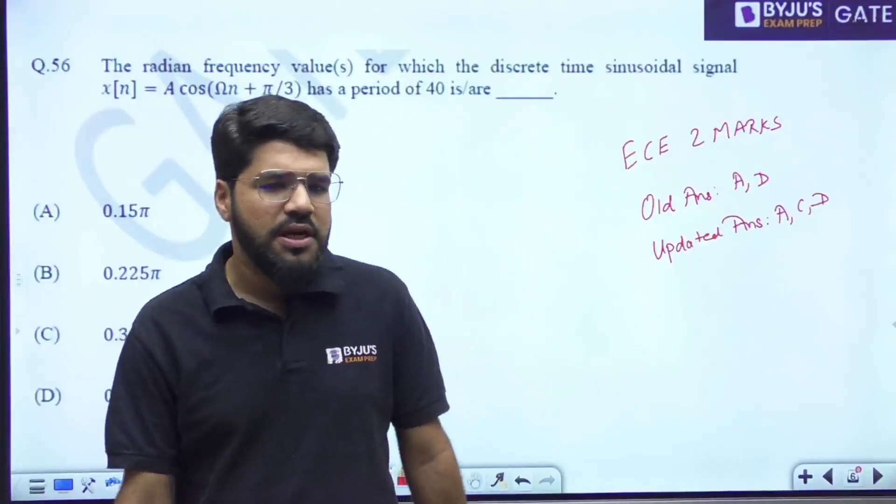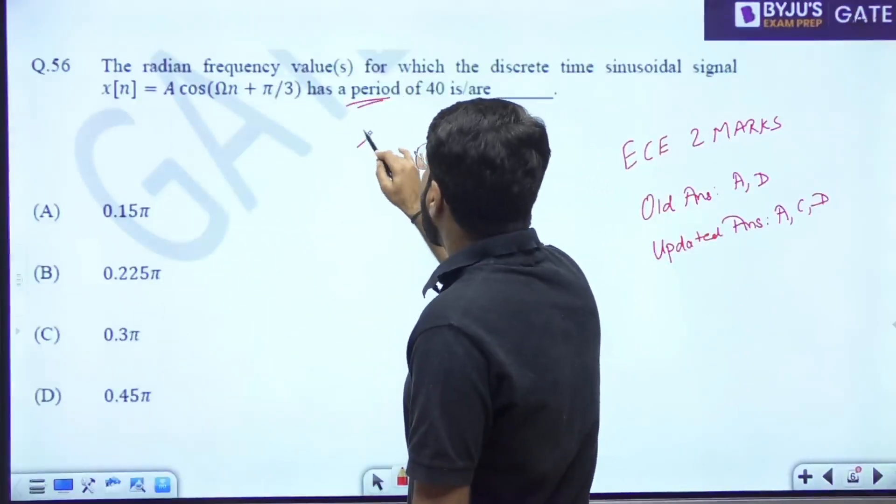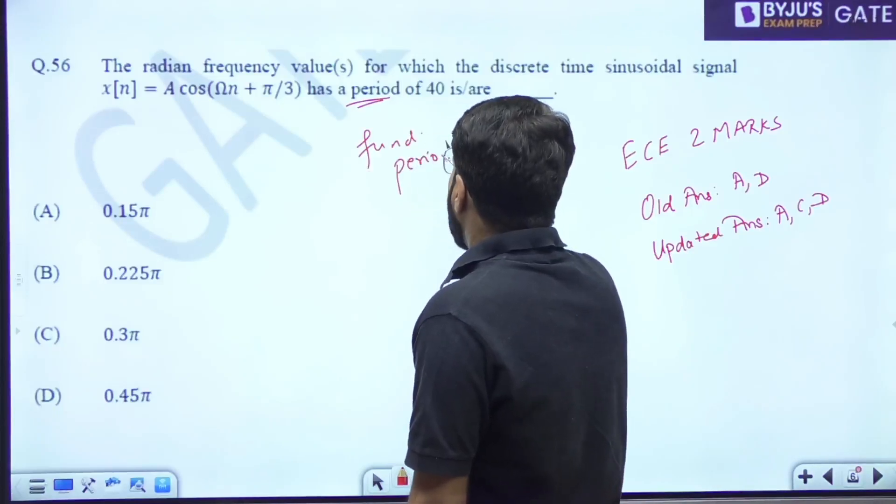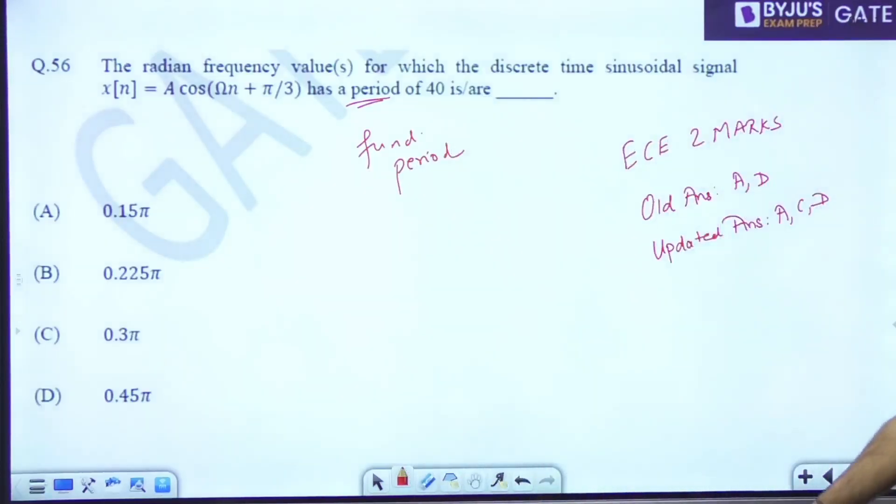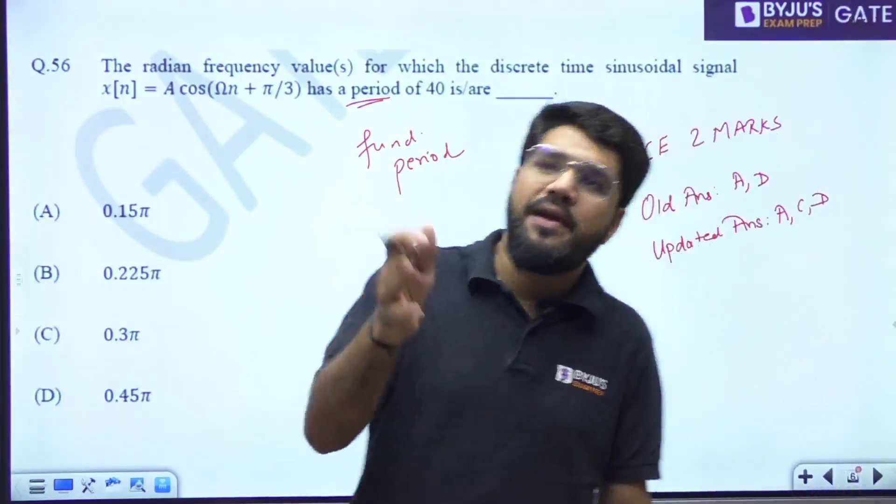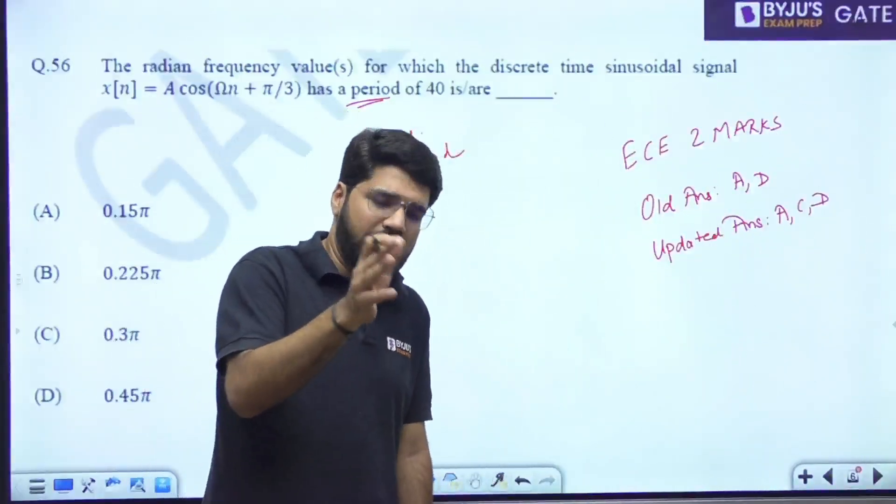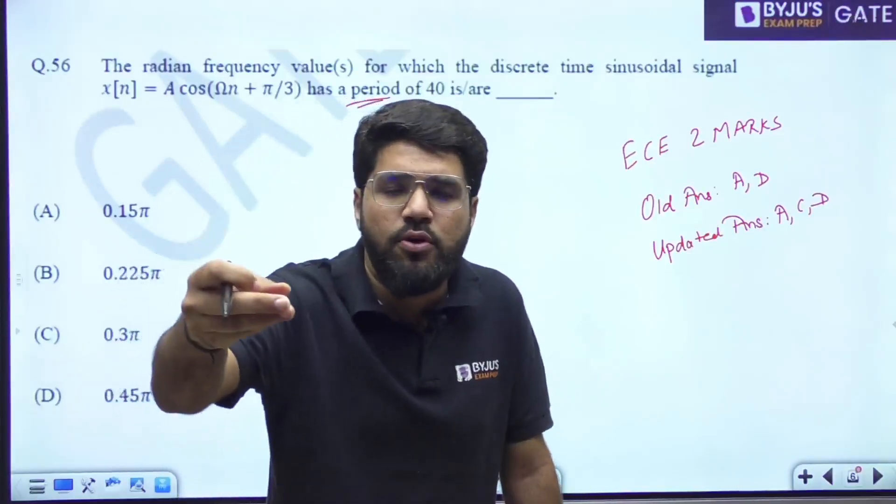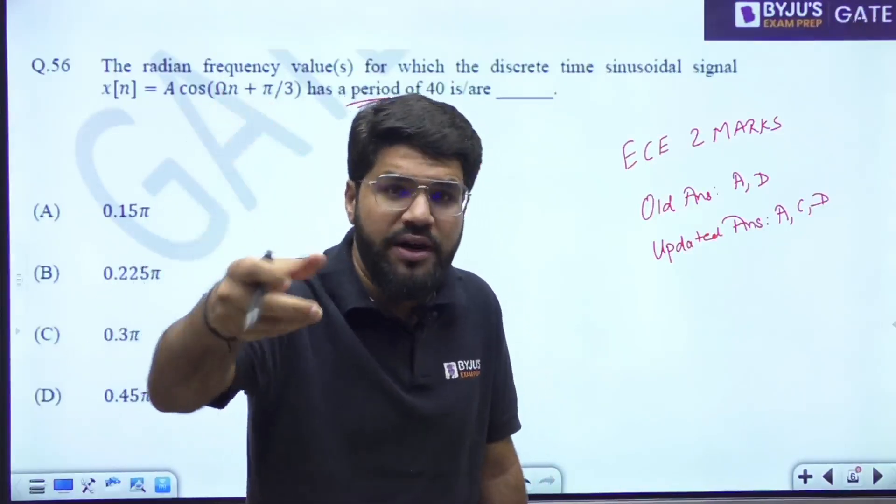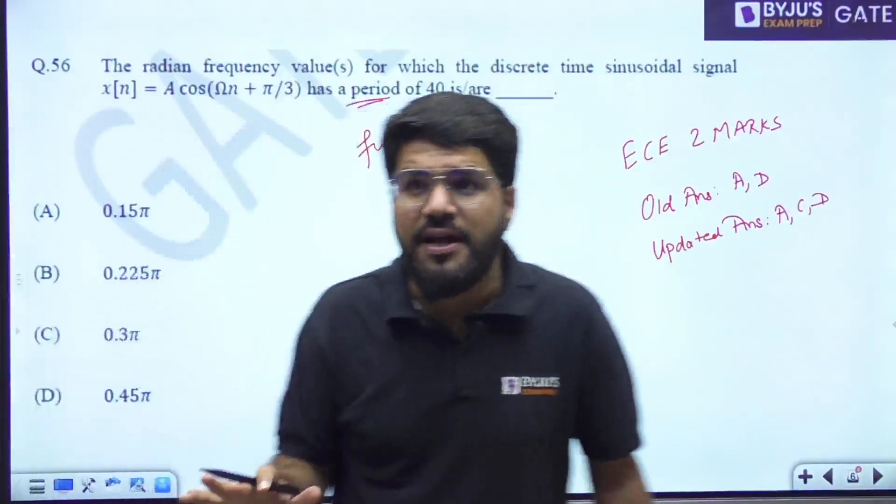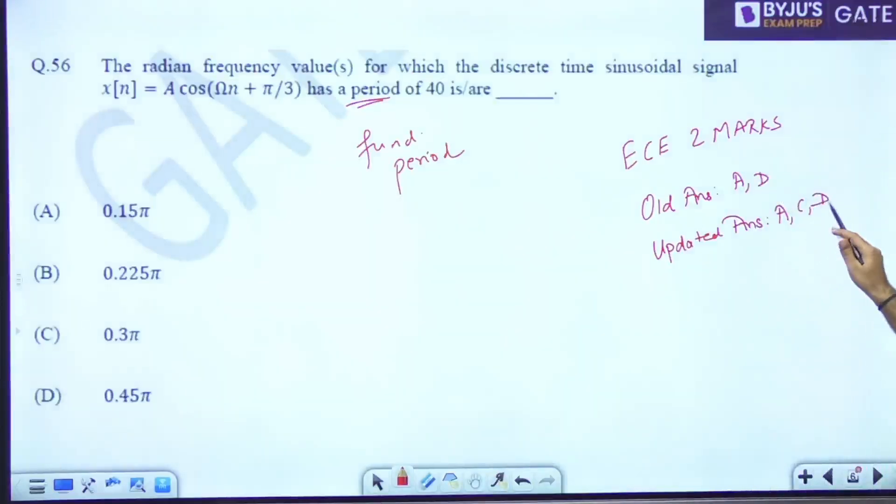This was expected because they haven't mentioned period or fundamental period. So if you take it with the fundamental period, the old answer A or D would be matching. But if you consider period, because a period can be any multiple - if I generally say period, if a signal has a period 2, it's periodic with period 2. It repeats after 2, it repeats after 4, it repeats after 6, it repeats after every integral multiple of the period. That's what we know. Accordingly, ACD.